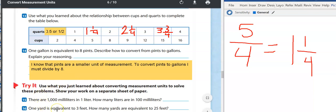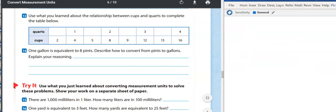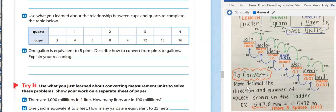Let's move on to 15. So now we're going to use what we just learned about converting measurement units to solve these problems. Make sure you are showing your work on a separate sheet of paper. 15 tells us there are 1000 milliliters in a liter. How many liters are in 100 milliliters? So I'm going to pull up our anchor chart and I want you to take this time to look at the anchor chart to the right. So our anchor chart is here to the right. So I see that there are 1000 milliliters in one liter. So our liter is our base unit. So that's going to be up here in blue.